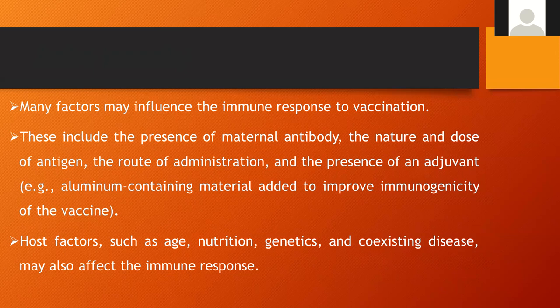There are different factors that may directly influence the immune response to vaccination. These include the presence of maternal antibody, which may interfere with vaccination; the nature or dose of the antigen; the route of administration; and the presence of adjuvants, which are very important to improve the immunogenicity of a vaccine. Host factors also matter, including the age of the individual — young and old individuals have different immunity levels. In older people, there is immunosenescence, meaning immunity degrades as age increases. Nutritional status, genetics, and co-existing diseases may also affect the immune response.